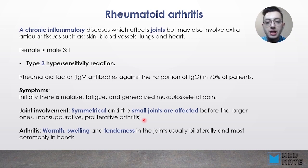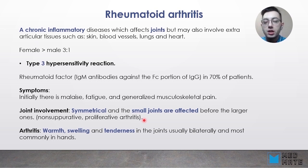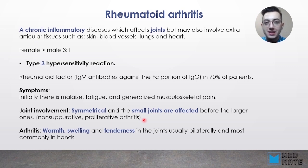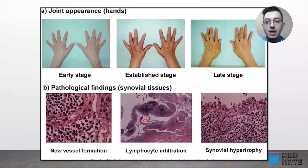Patients initially present with malaise, fatigue, and generalized musculoskeletal pain, which then develops into joint involvement. The joint involvement is symmetrical, with small joints affected before large ones. It is a non-suppurative proliferative arthritis, presenting with warmth, swelling, and tenderness in the joints, usually bilaterally, most commonly in the hands.